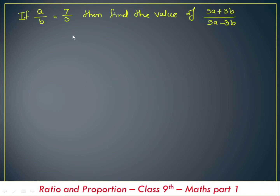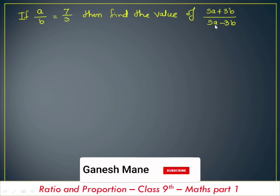If a divided by b is equal to 7 by 3, then find the value of 5a plus 3b divided by 5a minus 3b. So this is the question based on equal ratios. These two ratios are given to be equal: a by b is equal to 7 by 3, and from that we have to find the value of 5a plus 3b divided by 5a minus 3b.